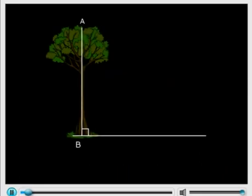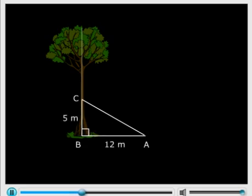This is the diagram that represents the given condition, and this is a very standard question. Now BC here represents the unbroken part of the tree. Point C represents the point where the tree broke, and CA represents the broken part of the tree. So triangle ABC thus formed is right angled at B.